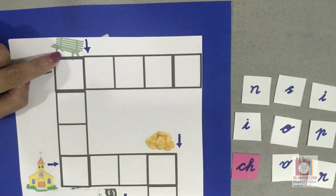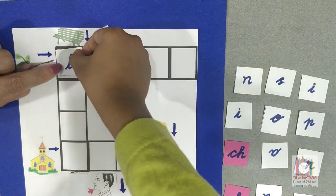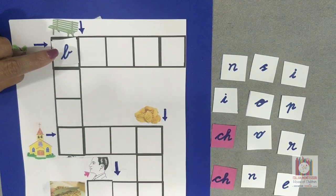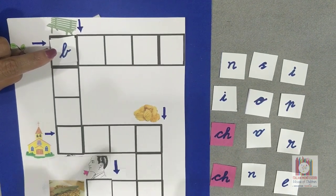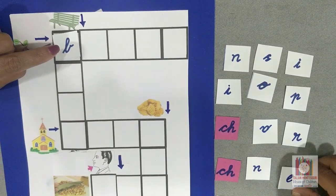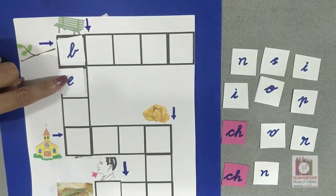Can you tell me what is the first sound when we say bench? B. After B, what did you hear when we say bench? E. Can you find E sound here? Bench.